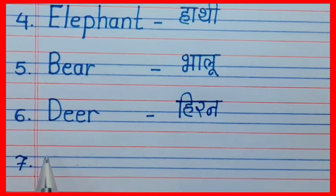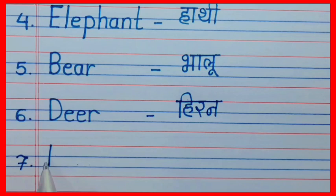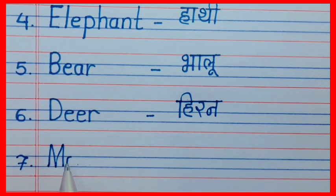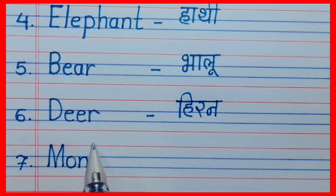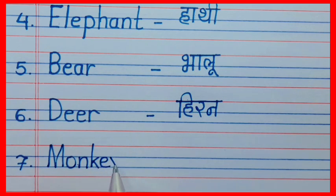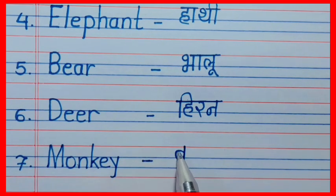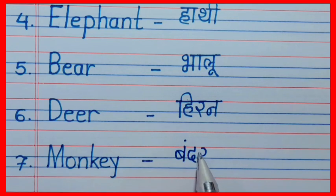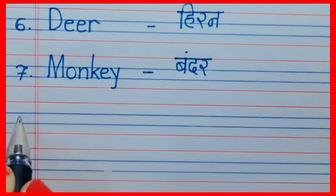Seventh is M-O-N-K-E-Y, monkey. Monkey means bandar.